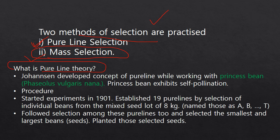Pure line theory was first proposed by a scientist called Johannsen. He worked on a crop called the princess bean, that is Phaseolus vulgaris. The specialty of this crop is that it exhibits self-pollination. He went and bought a large number of bean seeds. All of them were of different sizes, and he established 19 pure lines by selection of individual beans from the mixed seed.